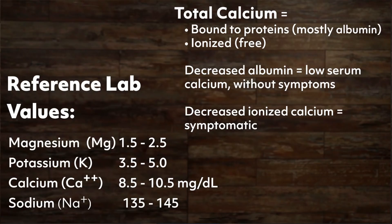Calcium is found primarily in the bones and teeth — actually 99% — with the remaining 1% dissolved in the blood. The normal range for total serum calcium is 8.5 to 10.5 mg per deciliter, and about half of that is bound to plasma proteins, mainly albumin, while the other half is ionized or free-floating. Since albumin is made in the liver, someone with liver problems or decreased albumin will show a low serum calcium without symptoms, because the decrease is in the protein-bound rather than the ionized calcium.